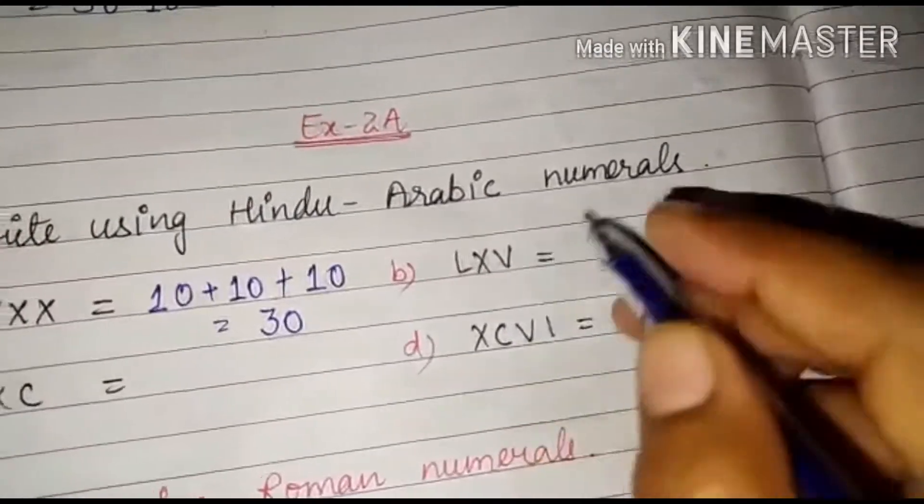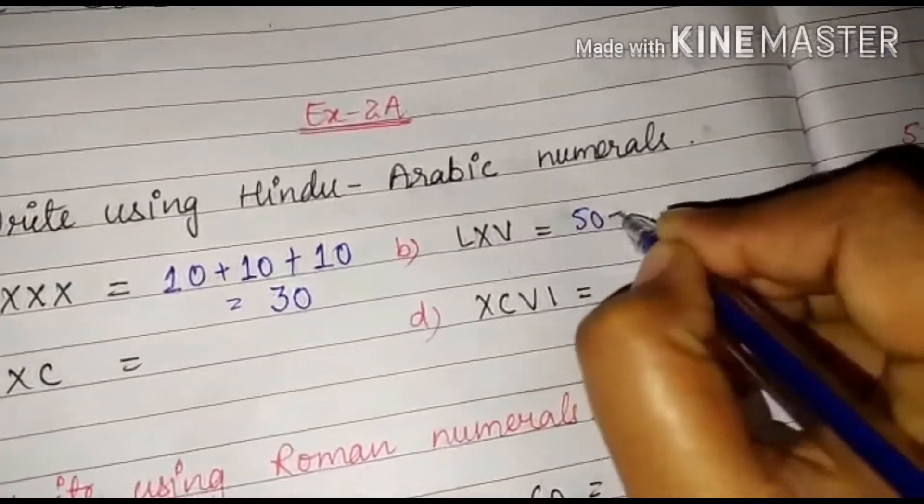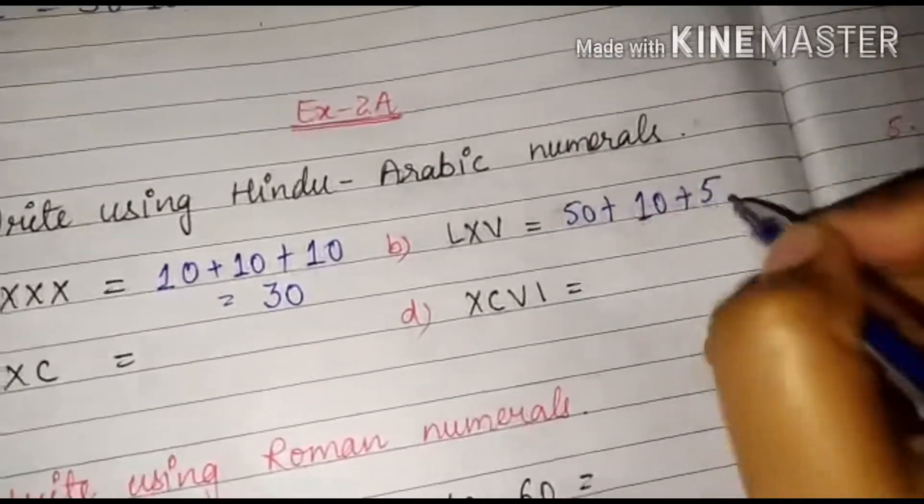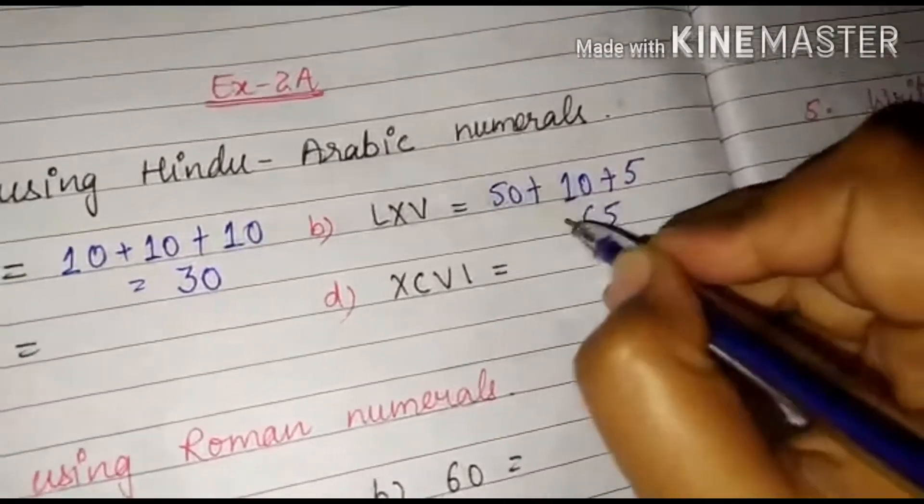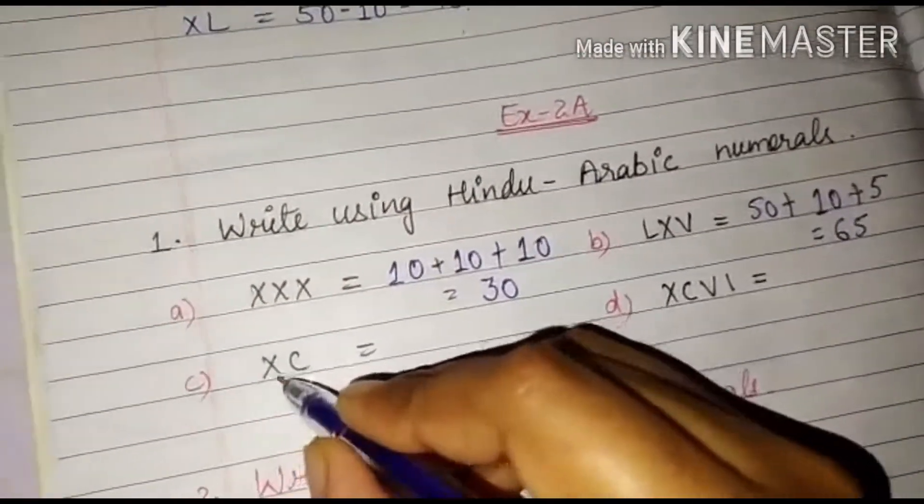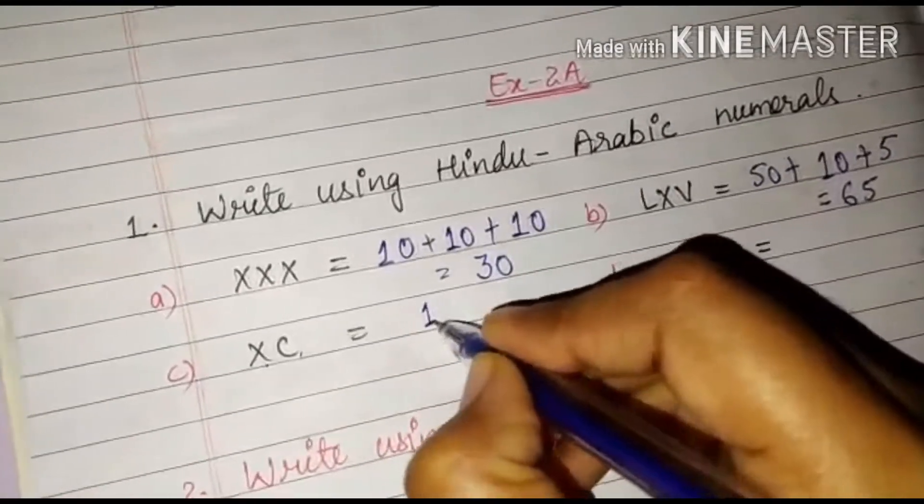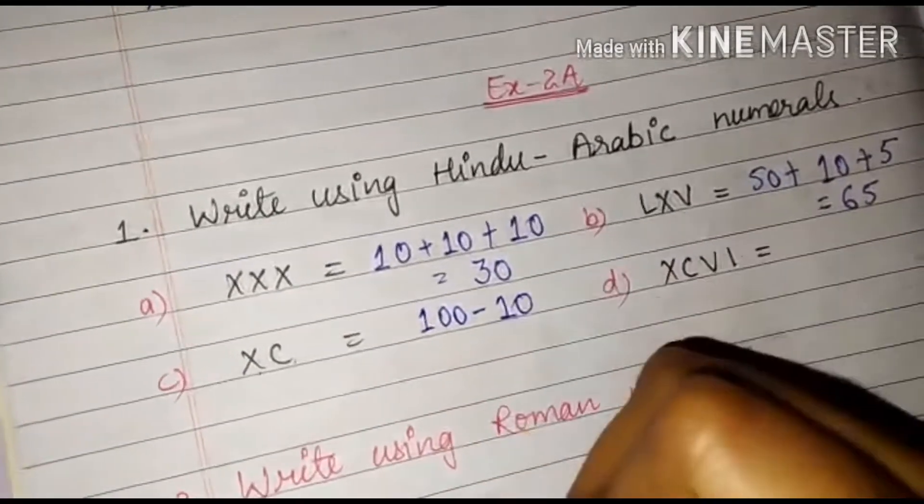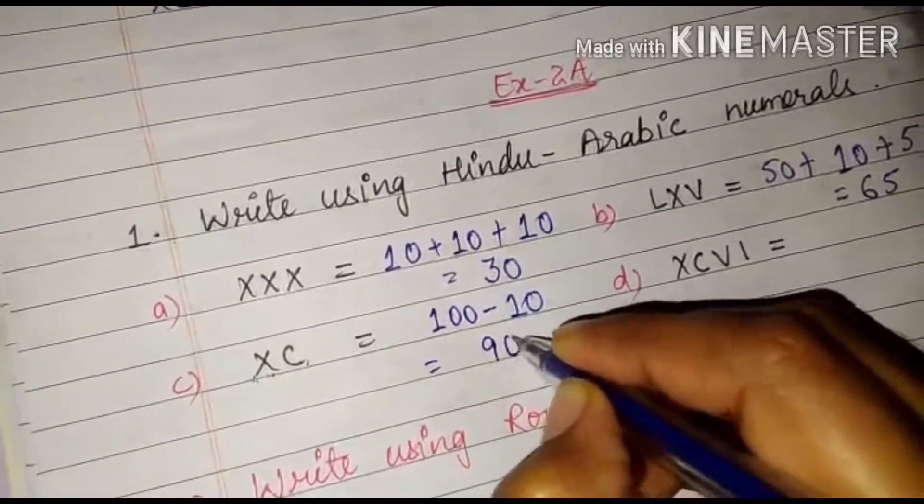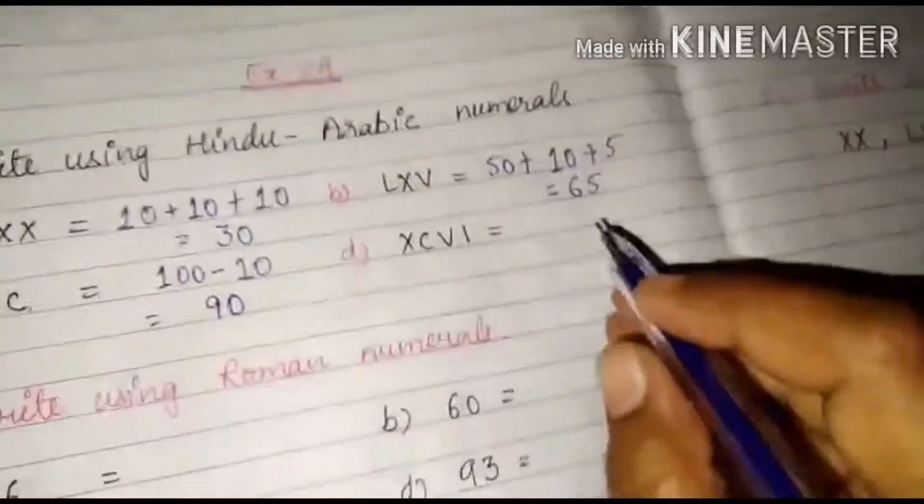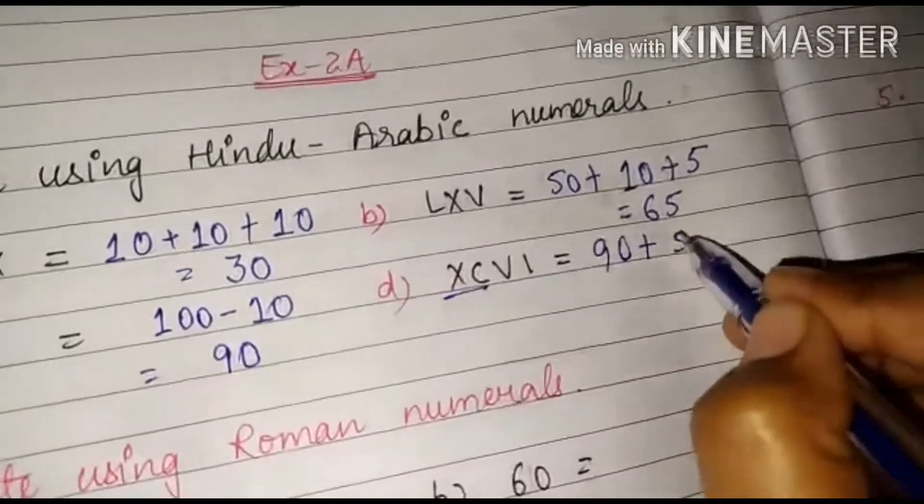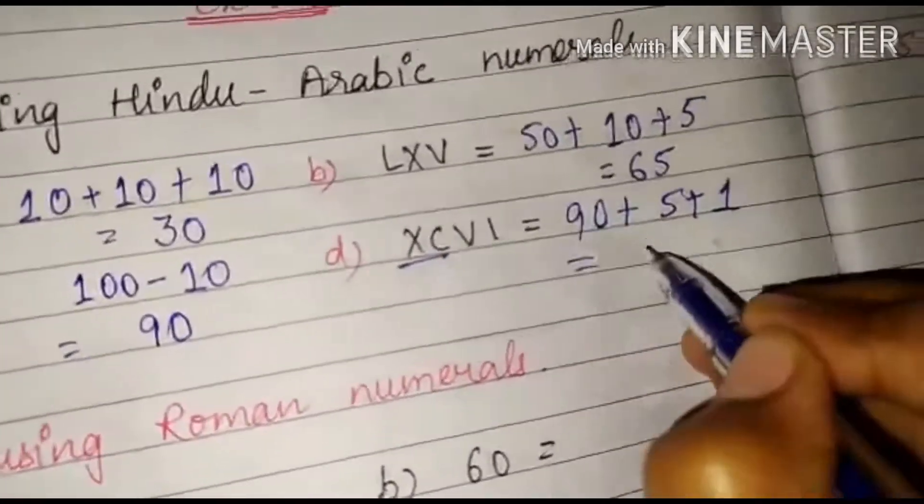Next question is LXV. So L is 50, X is 10, and V is 5. So it is 65. Now next is XCV. So XC, what will be XC? That will be 100 minus 10. Why minus 10? Because X is before C. That's why we have to subtract them and it's 90. So XC is our 90. So 90 plus V is 5 and I is 1. So it is 96.